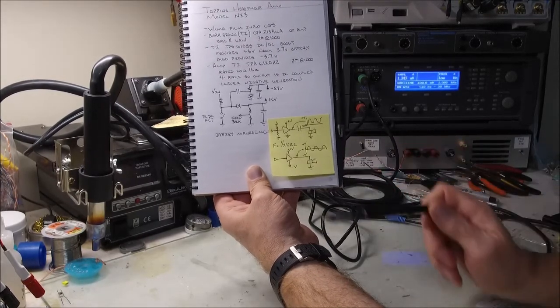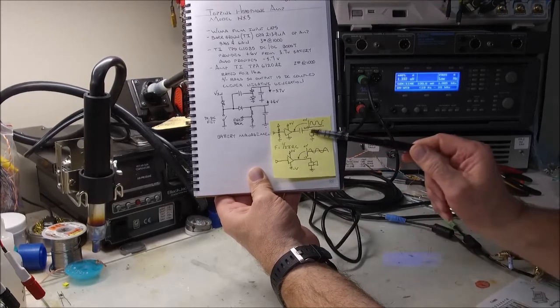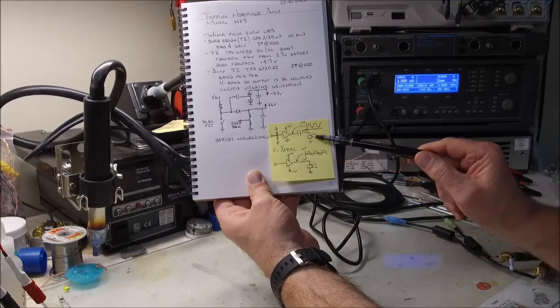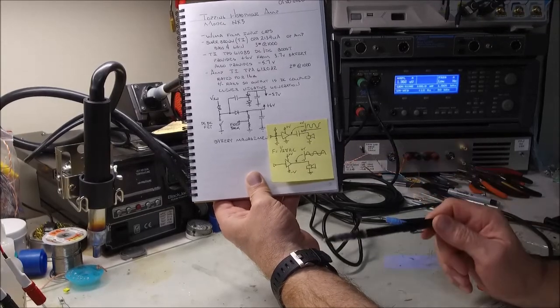And that's found by this formula here. The frequency cutoff point is 1 over 2 pi RC. R being the speaker, C being the capacitor.